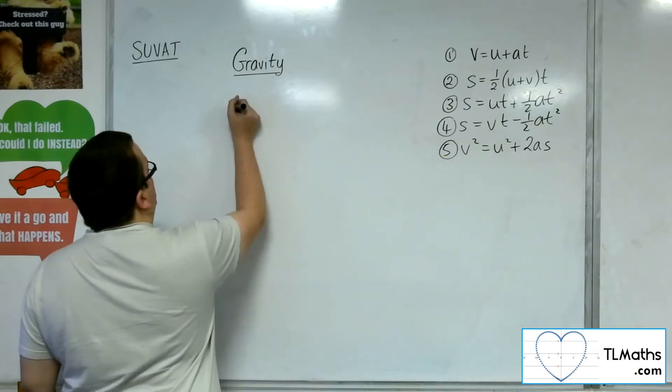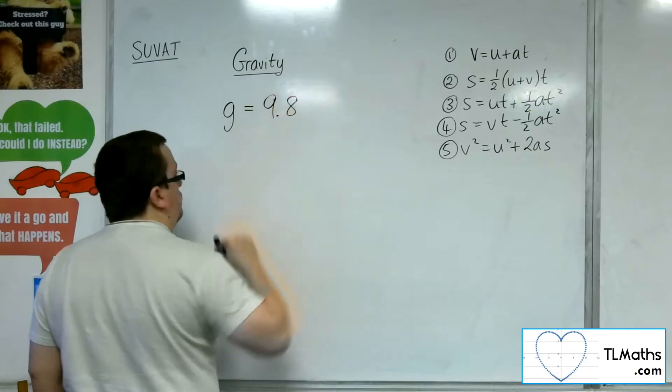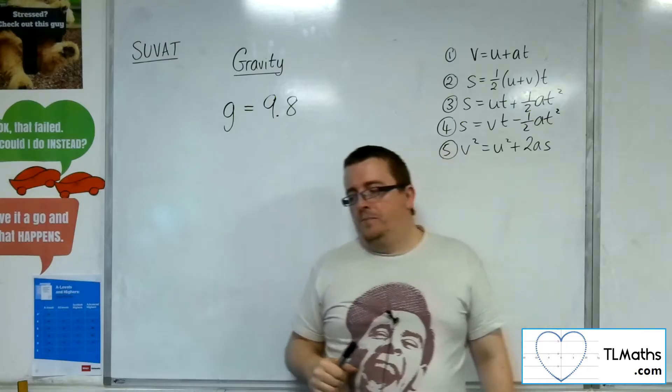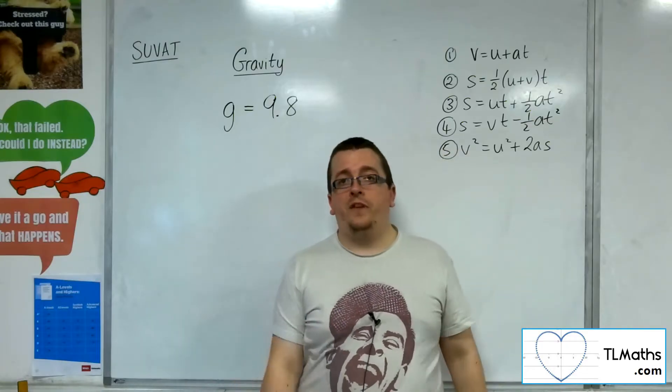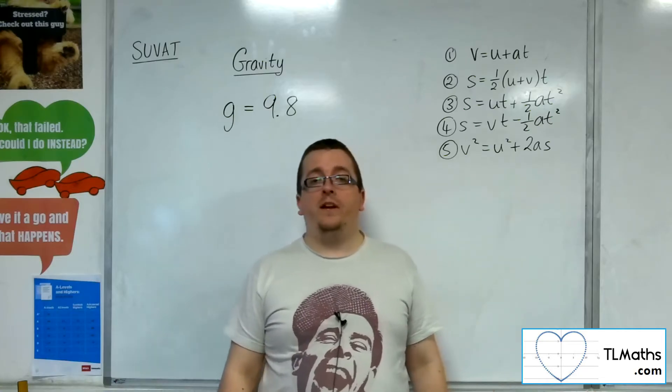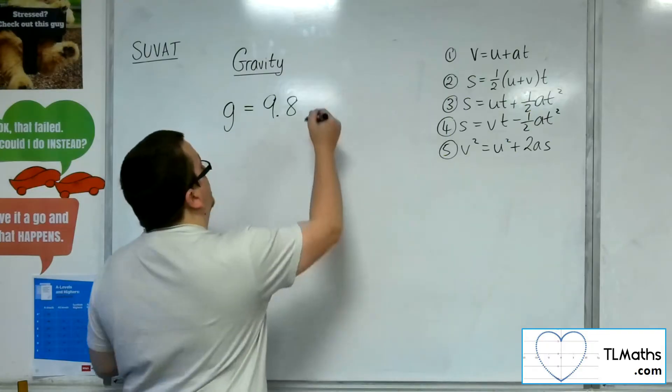Now, gravity, for those people who don't do physics, is an acceleration. So, if a particle is falling towards the Earth, then it is accelerating under gravity towards the Earth at 9.8 metres per second per second.